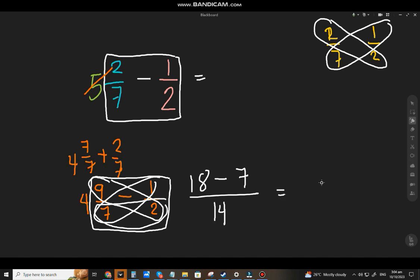18 minus 7. That will be 11. Over mo ng 14. At, tagay mo si 4 dito. So, and that's the final answer. Yung 5 and 2 sevenths minus mo ng kalahati or 1 half. You'll get 4 and 11 over 14.